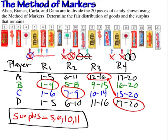If we wanted to share the surplus, we would have to find another way to distribute it — perhaps using another fair division method we've learned, such as divider-chooser, lone chooser, or lone divider. Or it could simply be left in the surplus for another day.